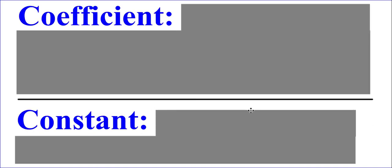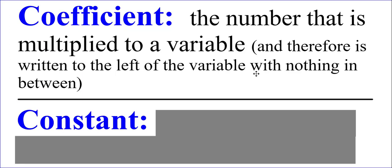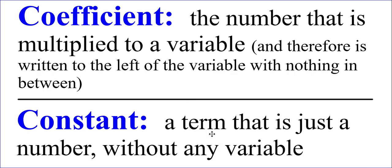Now, let's also review the words coefficient and constant. A coefficient is the number that is multiplied to the variable, and therefore it's going to be written to the immediate left of the variable with nothing in between as we normally see multiplication with the number and the variable being shown. A constant, however, is a term that is just a number without any variable.